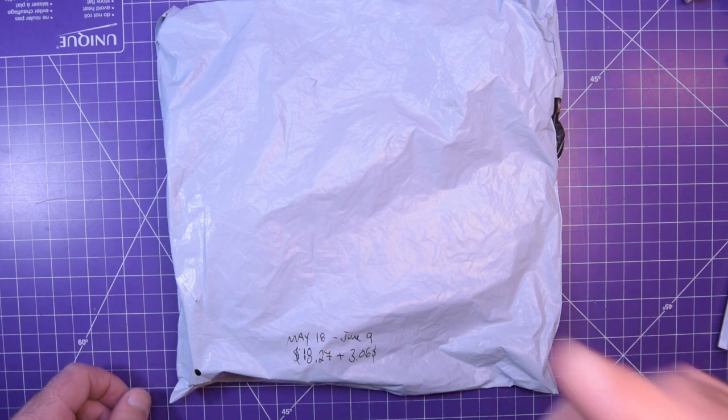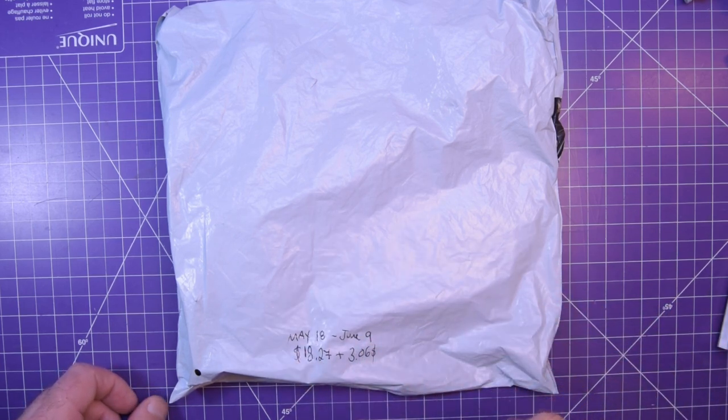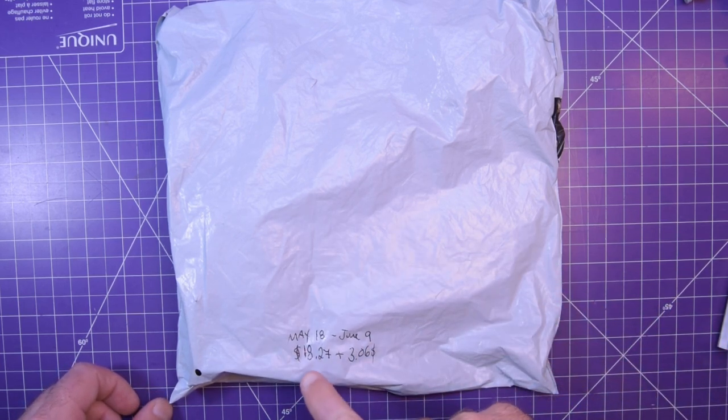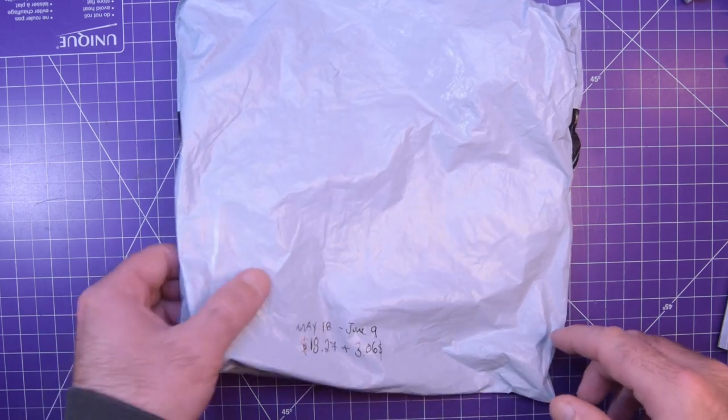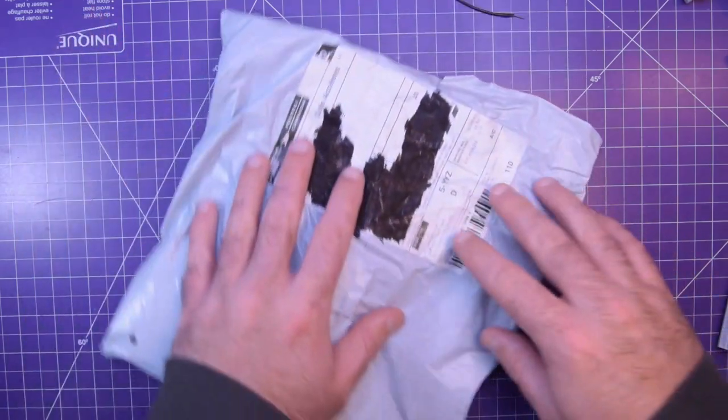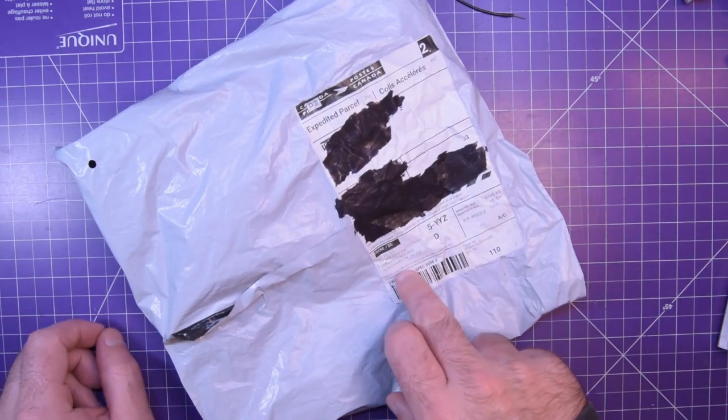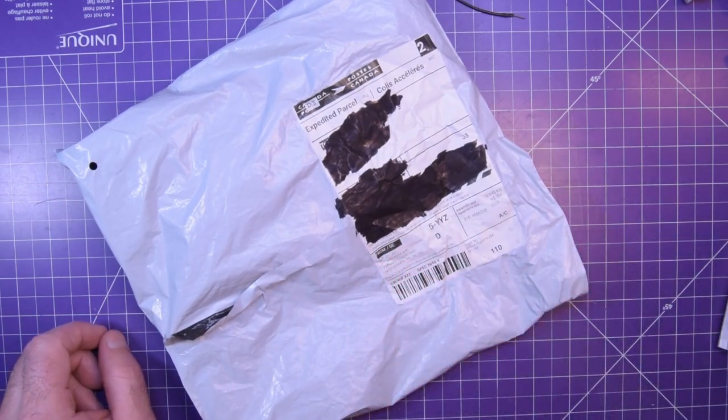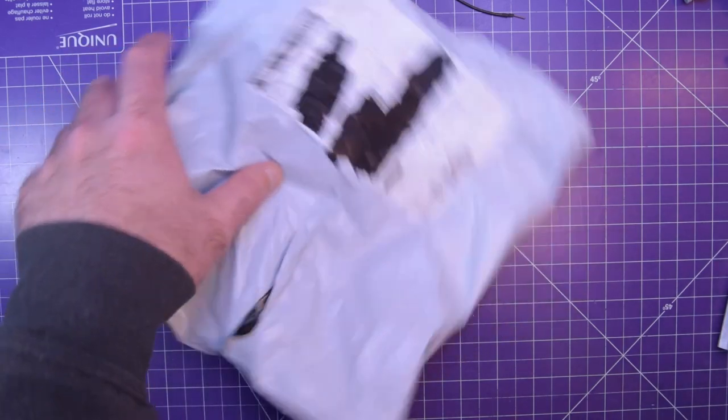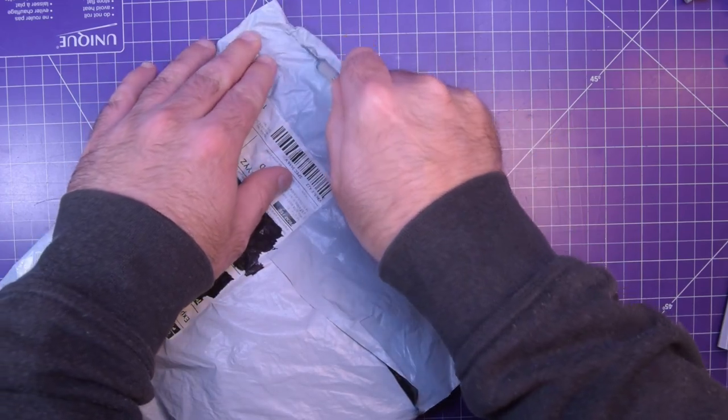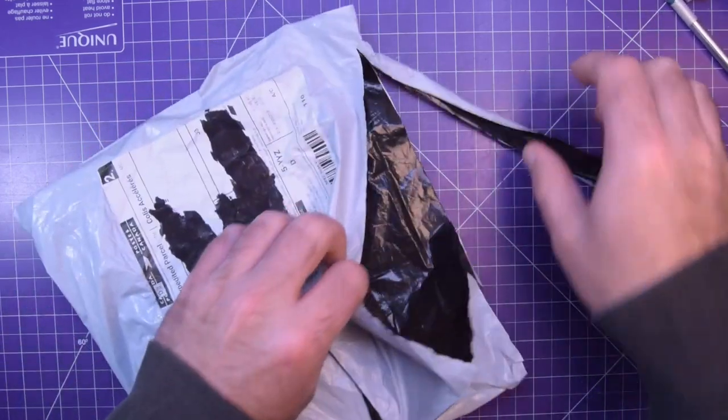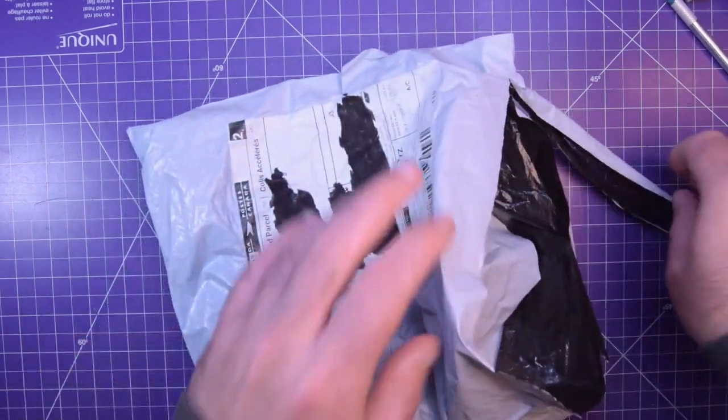First one up is this one here, ordered May 18th, arrived June 9th, $18.27 and $3.06. And this comes from that reshipping warehouse in Mississauga. I think it's in the GTA. So we don't know what it is, but we're soon going to find out.